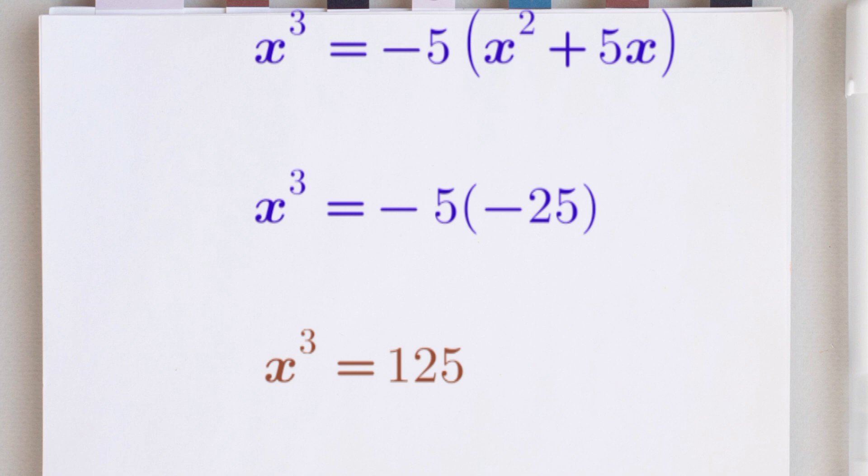The two negatives cancel, and we have our final answer: x raised to the power of 3 is equals to 125. I hope you got your answers right. Thanks for sticking through to the end of this video. Please don't forget to subscribe. Bye.